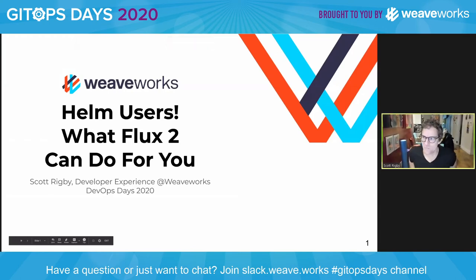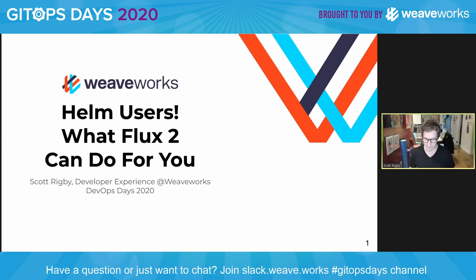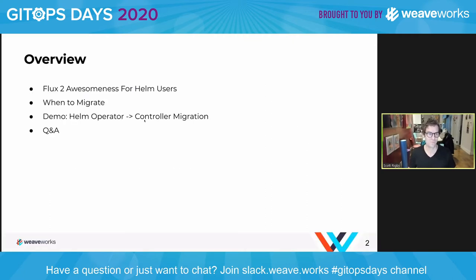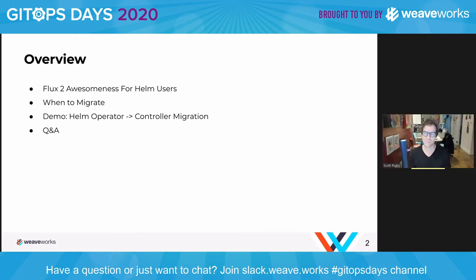I'll try to be clear and skip things that aren't really critical. The overview: I'm going to go over some of Flux2 awesomeness specifically for Helm users, briefly mention when to migrate and perhaps when you might not migrate.